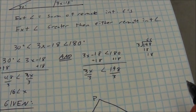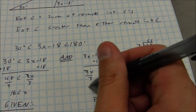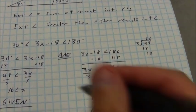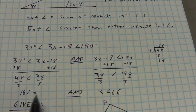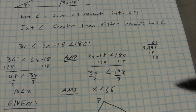And so as a result, I find out that x is less than 66. Now remember, I have to have these two things. x has to be greater than 16, and it has to be less than 66.